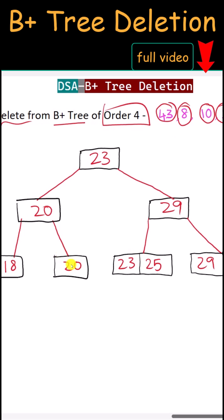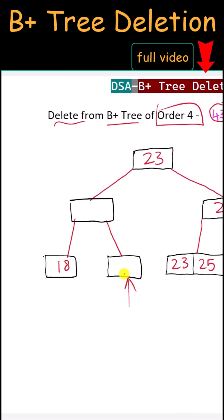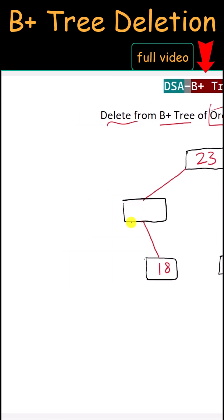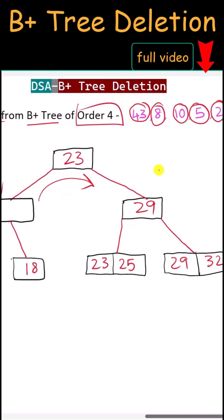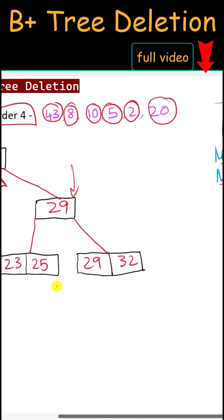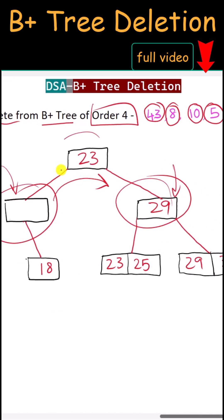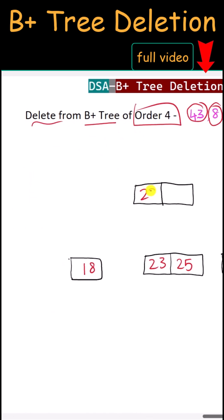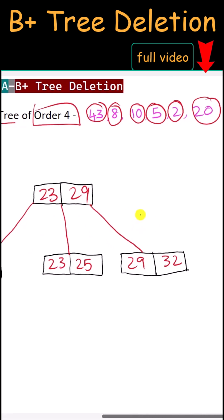Next we delete 20. We delete from the leaf node and from the internal node. Now this node is empty, and we cannot borrow from the left child, so we merge them together. Now the parent node is also empty, and we cannot borrow from the sibling either because it also has the minimum number of keys. That means we have to shrink the height and merge with the root. After merging, we get 23 and 29 in the root, with the left child, middle child, and right child arranged accordingly. This is the final tree after deletion. Thank you.